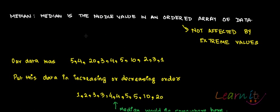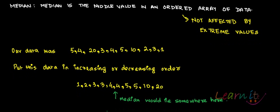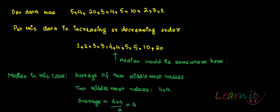Median is the middle value of an ordered array of data. You have raw data, and you will either put it in increasing or decreasing order and find the value which divides the entire data set into two parts. So supposedly if your data is: 5, 4, 20, 3, 4, 5, 10, 2, 3, 1 — your task is to put this data in increasing order.